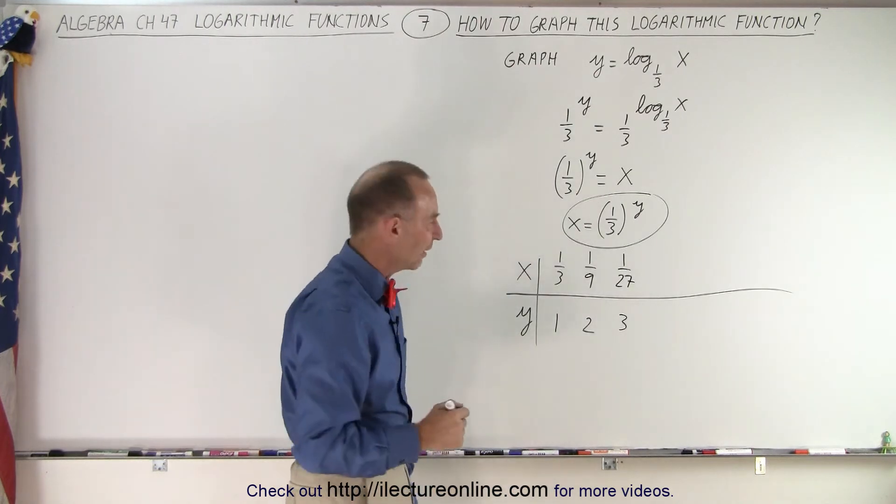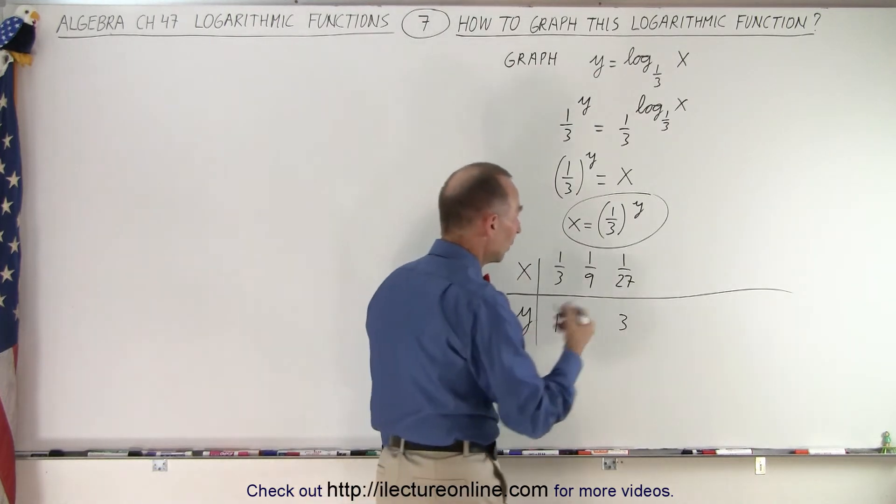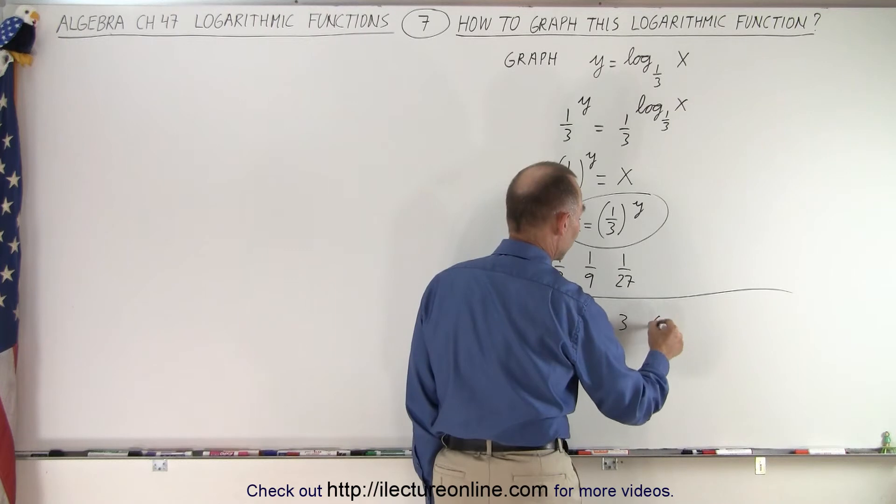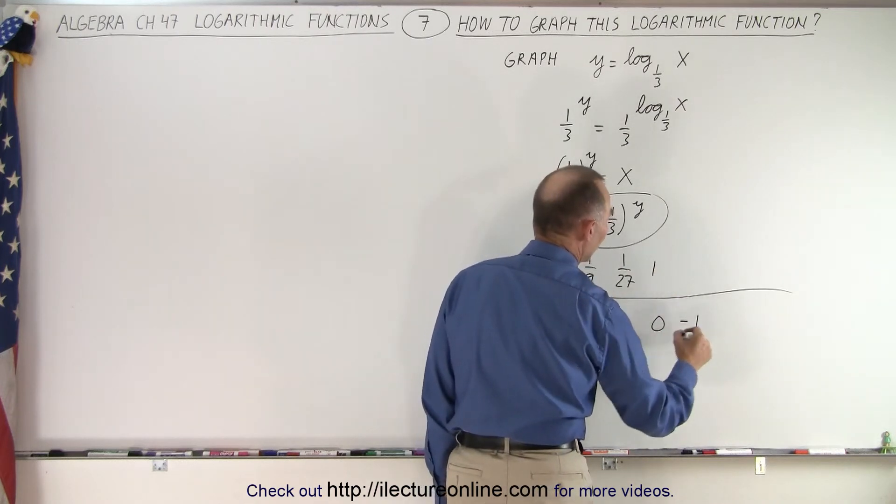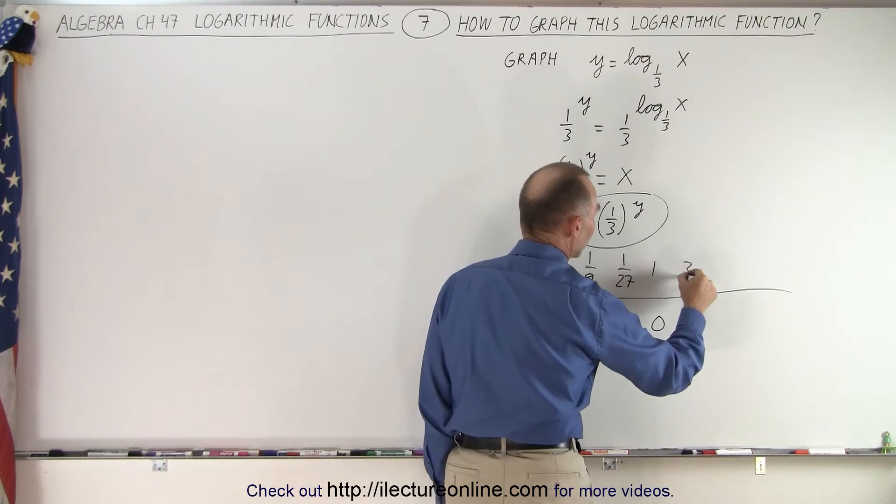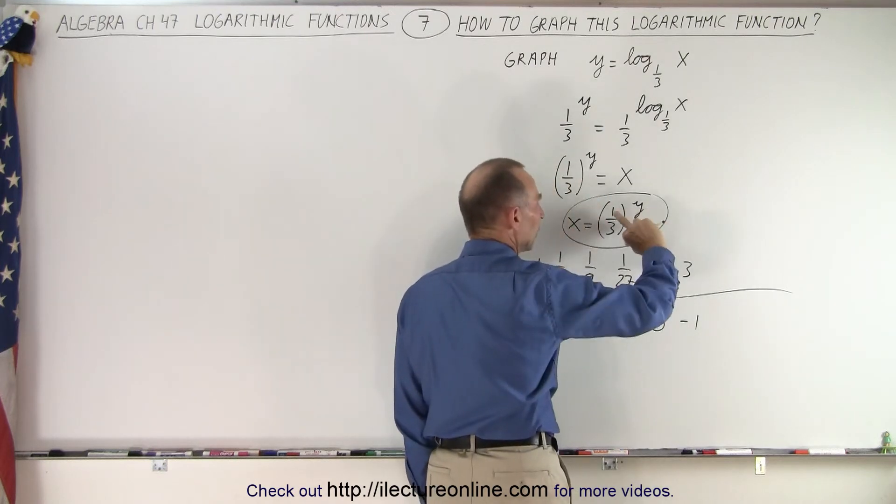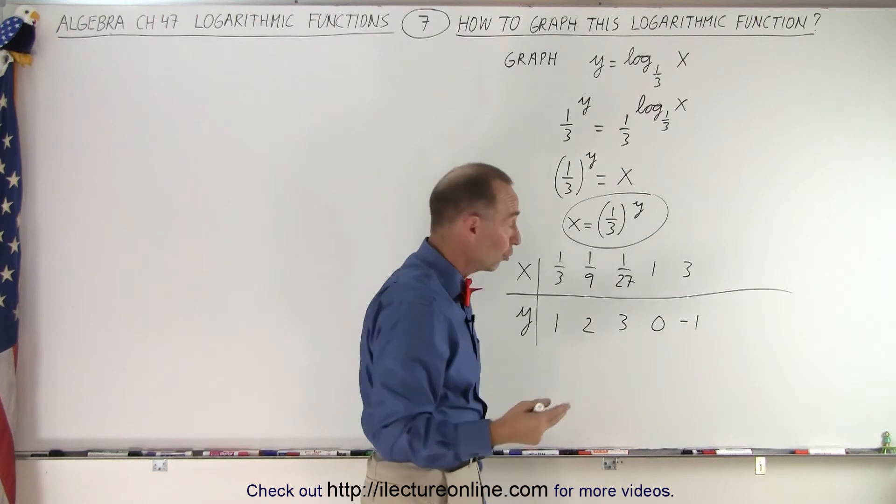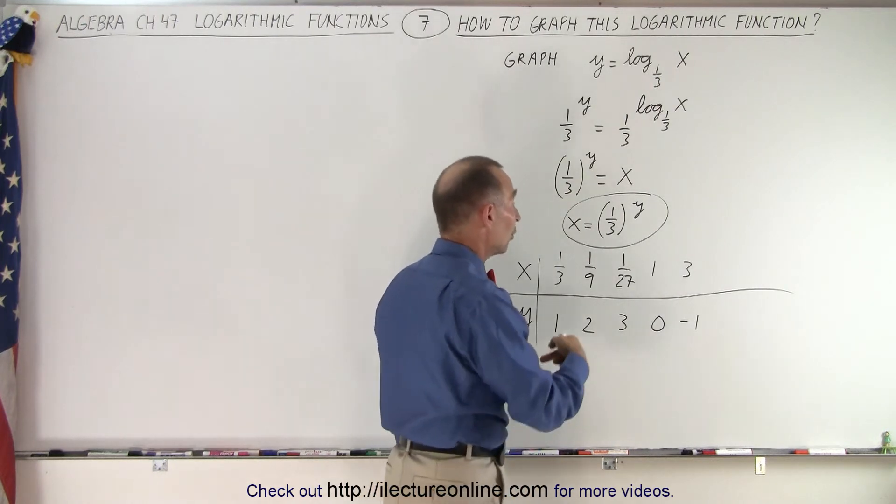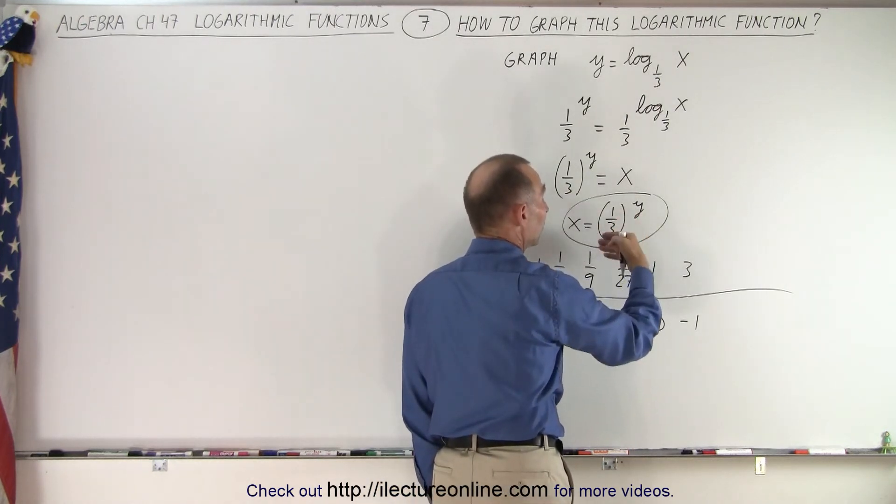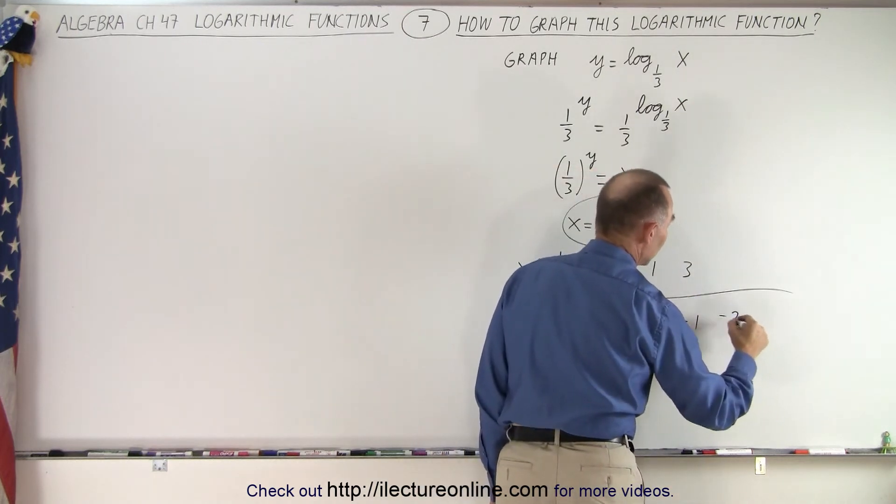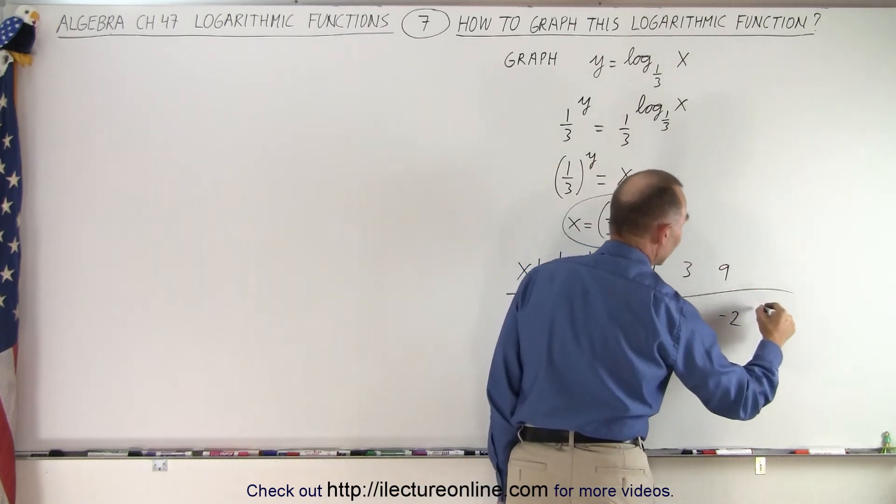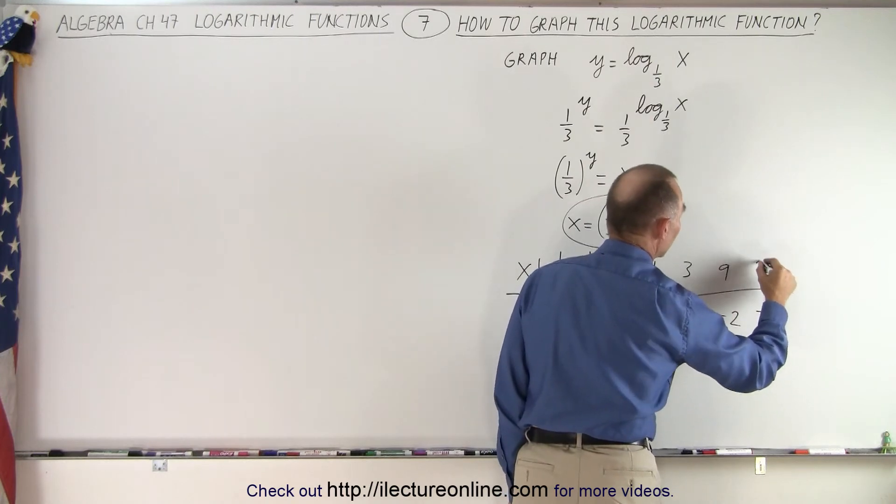How about if you get negative exponents? Let's start with 0. What if y is 0? Then x is equal to 1. If y is negative 1, then x will be equal to 3, because if this is negative 1, it turns the fraction around. And if y is negative 2, then you get 9. And if y is negative 3, then you get 27.